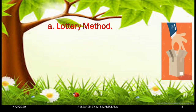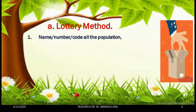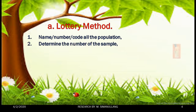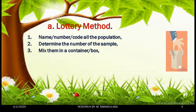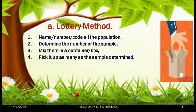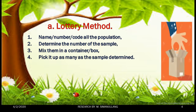Let's discuss the first method: the lottery method. Following our previous procedures, the first step is to name or code all the population. Then, decide the sample size. After that, having written down the name and number of each member of the population, we need to mix them in a container or box. After that, we may take or pick the sample as many as determined.